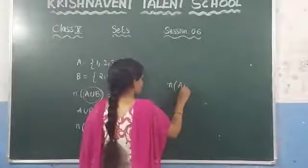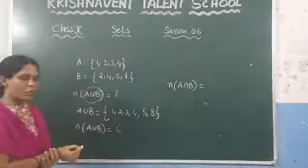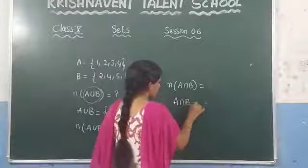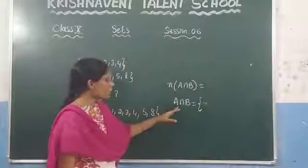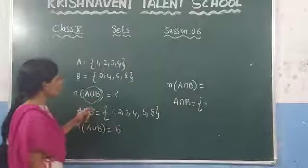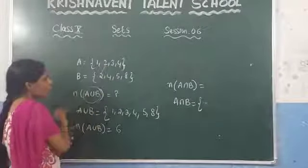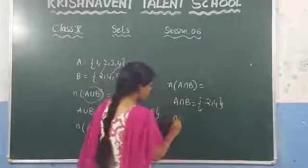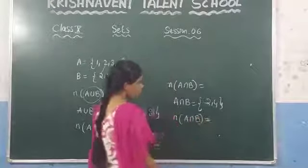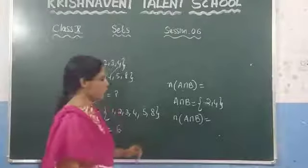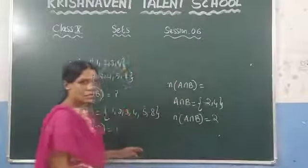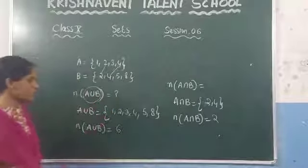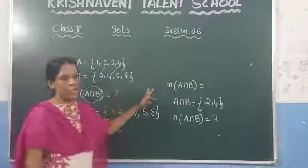Suppose we are asked to find N(A ∩ B). First, find the elements in A ∩ B — you need to write the common elements present in both A and B. What are the common elements? 2 is a common element and 4 is a common element. So A ∩ B = {2, 4}, and N(A ∩ B) = 2. Like this, if given any sets you can find N(A ∪ B) or N(A ∩ B). Now there is a relationship between N(A ∪ B) and N(A ∩ B).